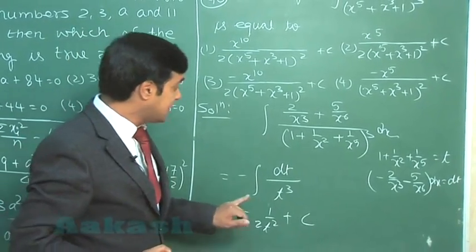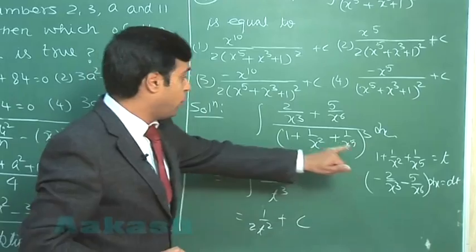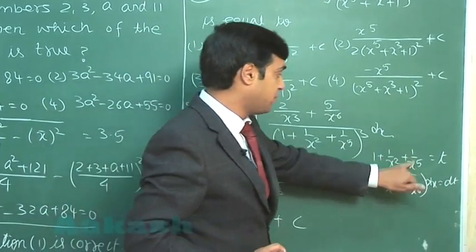So we can see from the given options since t is 1 plus 1 by x^2 plus 1 by x^5, substitute this term and check the options.